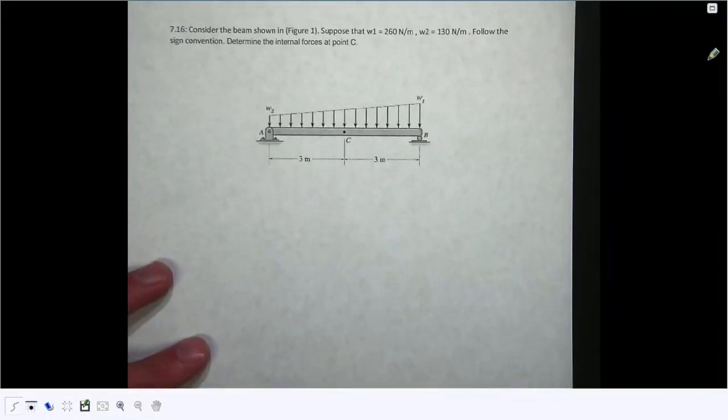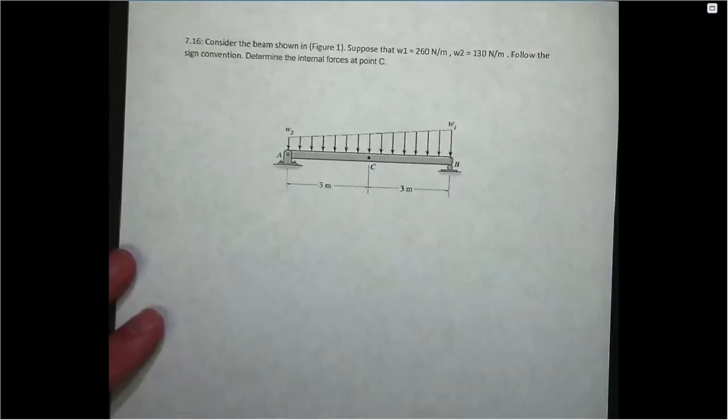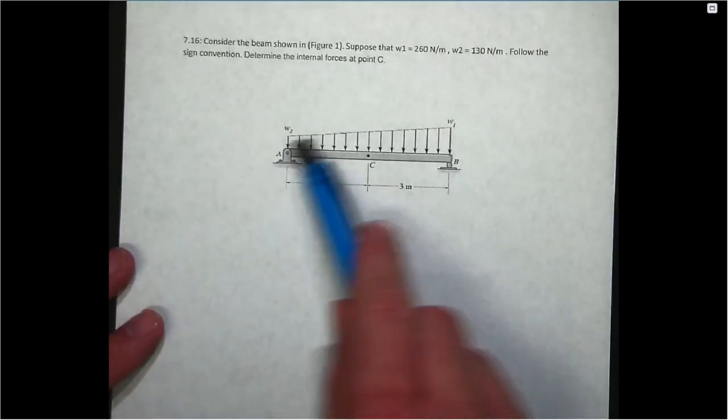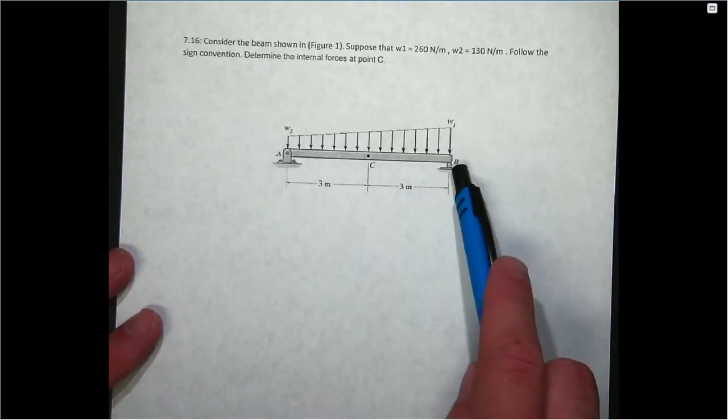For this next learning module, we'll see how to get started on problem 7.16, which is actually going to be on your final exam, which will feel a lot like a homework. We have a distributed load placed across a beam with a pin reaction at A and a roller reaction at B.